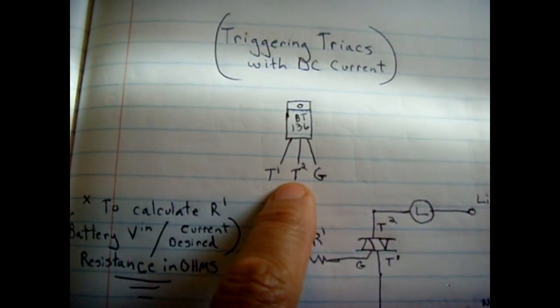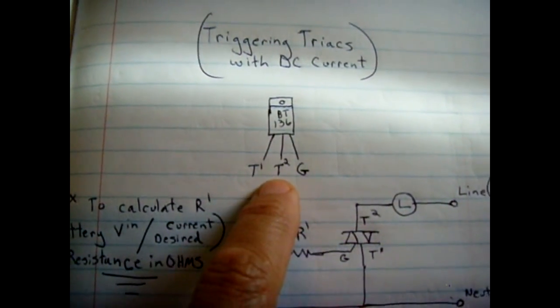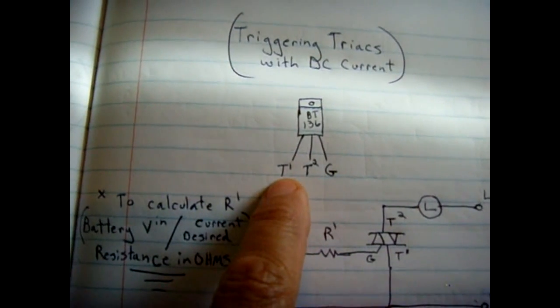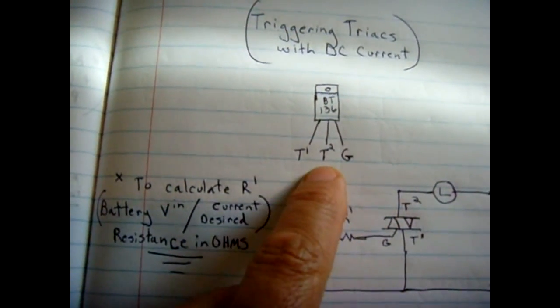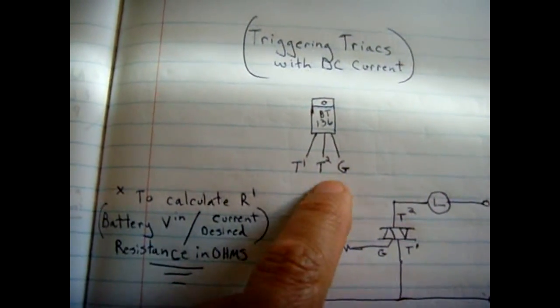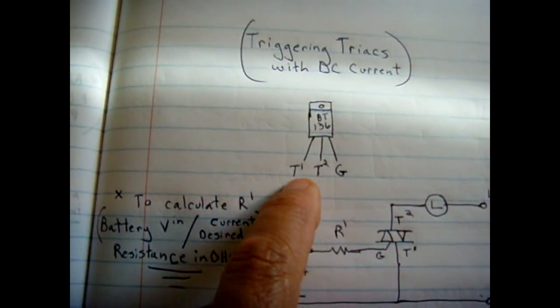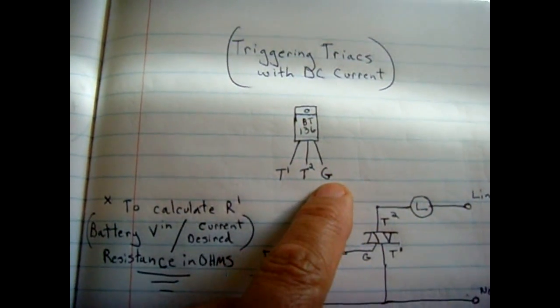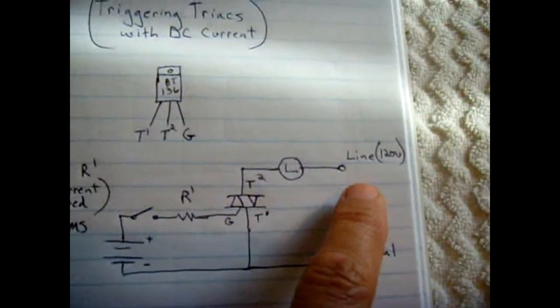The one I'm using is a BT 136-600 and the pinout is just like this: T1, T2, and gate. T2 is gonna go on the load side, T1 goes towards the neutral side, and G is the gate.